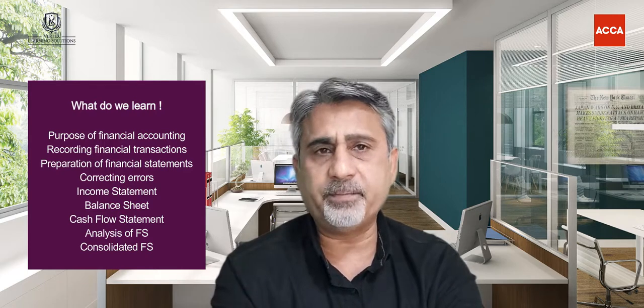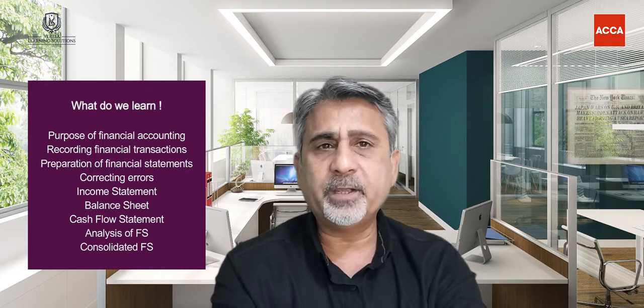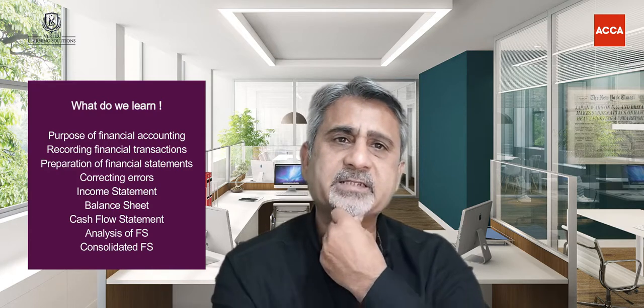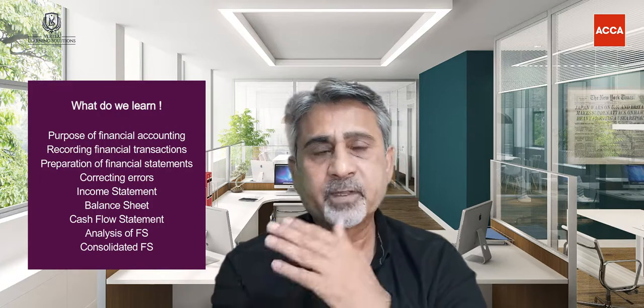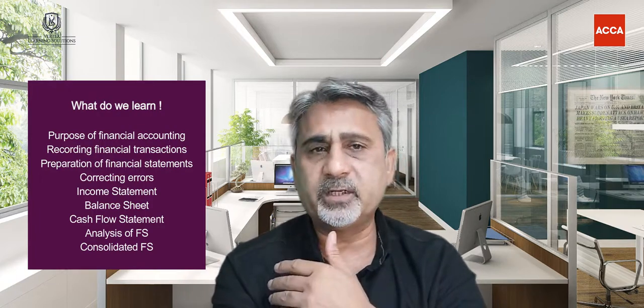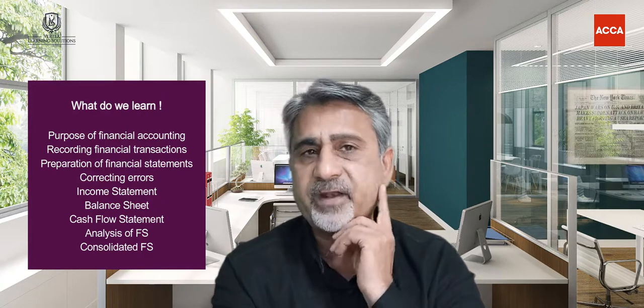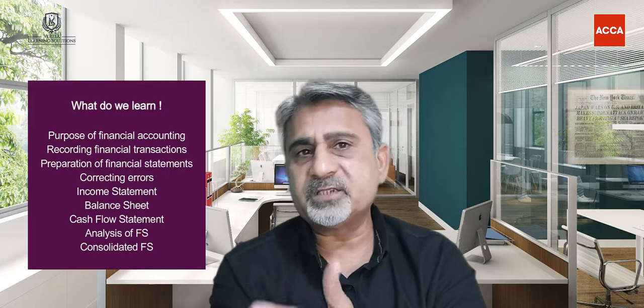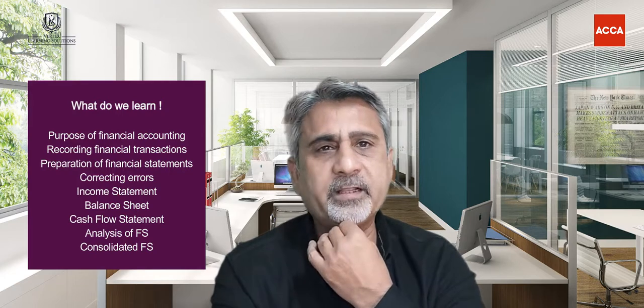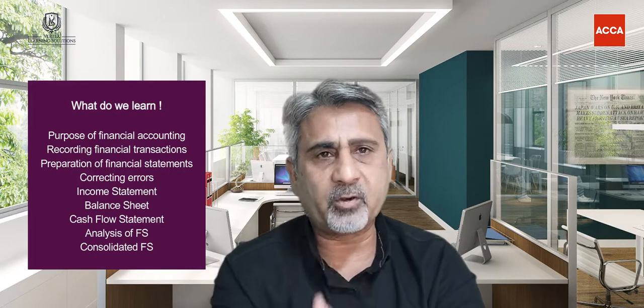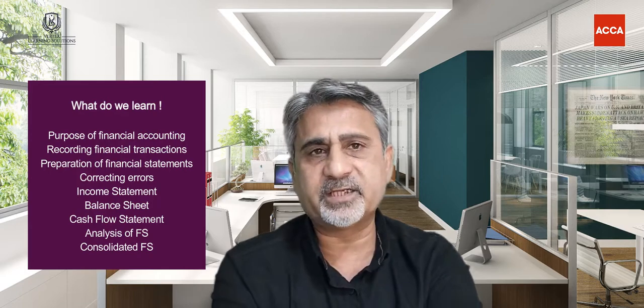There are two parts of accounting: bookkeeping and reporting. Bookkeeping is the process of recording financial transactions. In this course, we are going to discuss how to record financial transactions — we are going to learn debits and credits, journals and ledgers, and then what errors or mistakes we made while preparing financial statements or while recording financial transactions, and how to correct those errors.